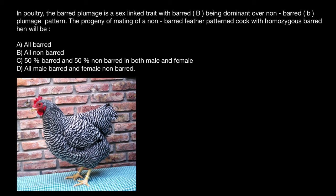But in birds, the hen or female specifies the sex of the progeny, because the female is heterozygous and males are homozygous for the sex chromosome. We call this system ZW. Males are going to be homozygous and have the ZZ genotype, and females are going to be heterozygous and have the ZW genotype.